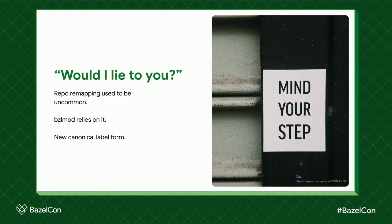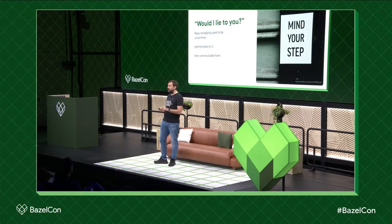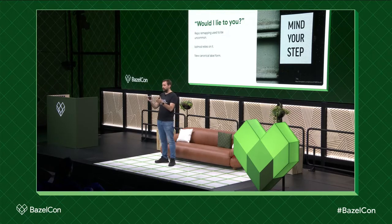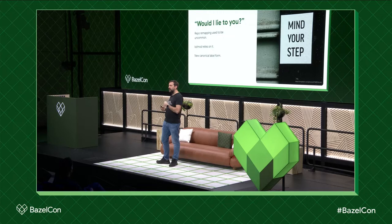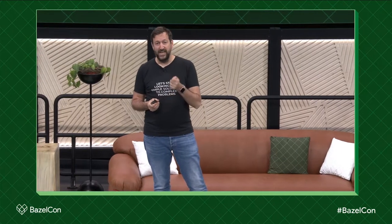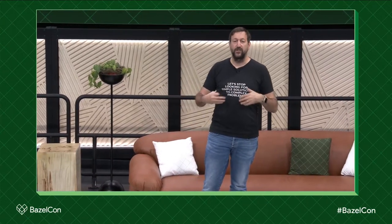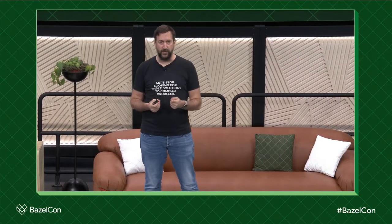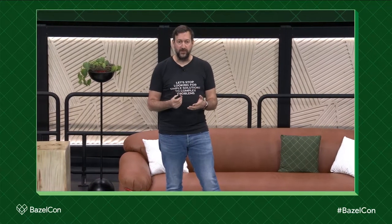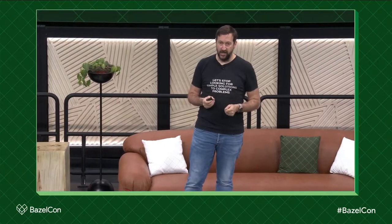There's a new canonical label form. Traditionally, a fully qualified label looks like @workspace_name//path:target. The new canonical form prepends an additional @. So you have @@workspace_name//... The nice thing is that when you pass that through the label constructor, it doesn't get remapped again — it's already fully expanded. It doesn't go through remapping, and everything works the way you expect. That is the thing we needed to get Apple Rules Lint working with Bzlmod. Thank you very much to the Bazel team for implementing that.